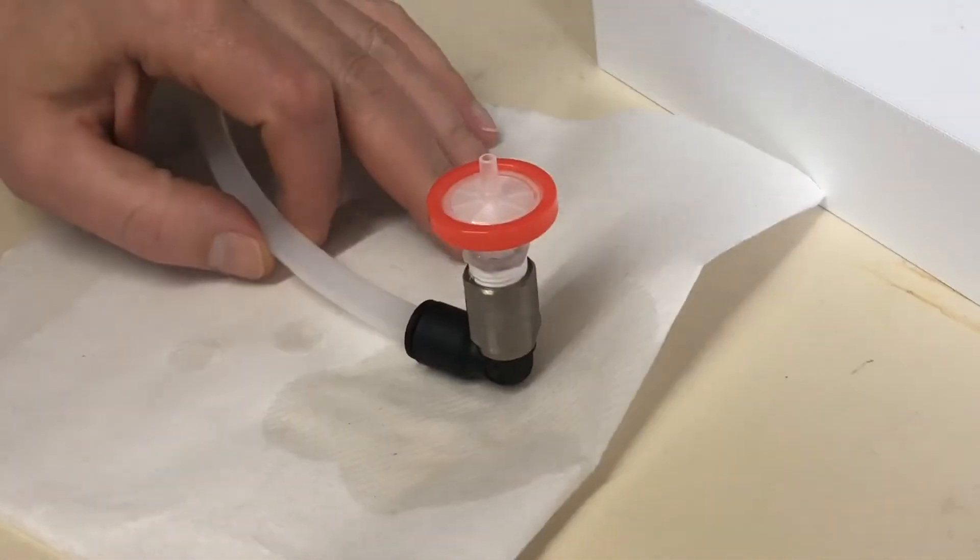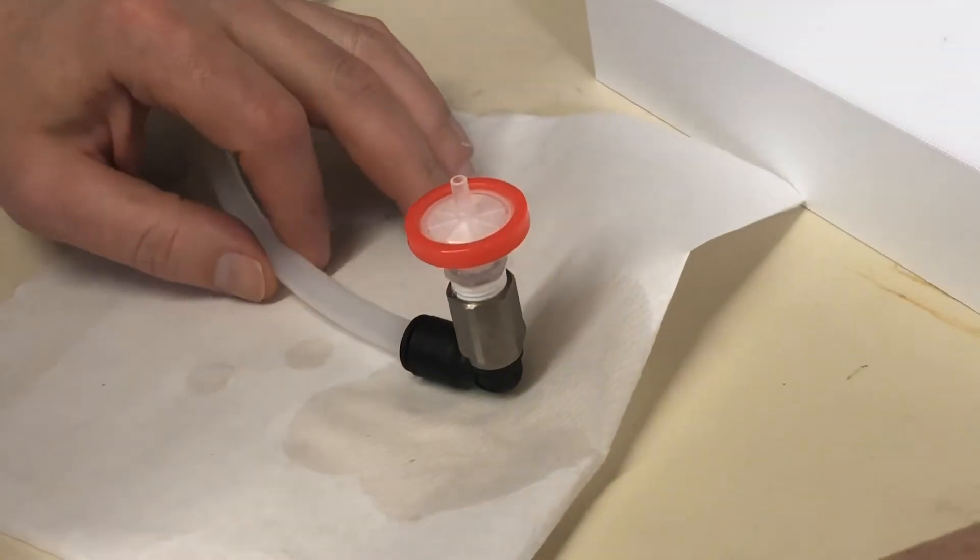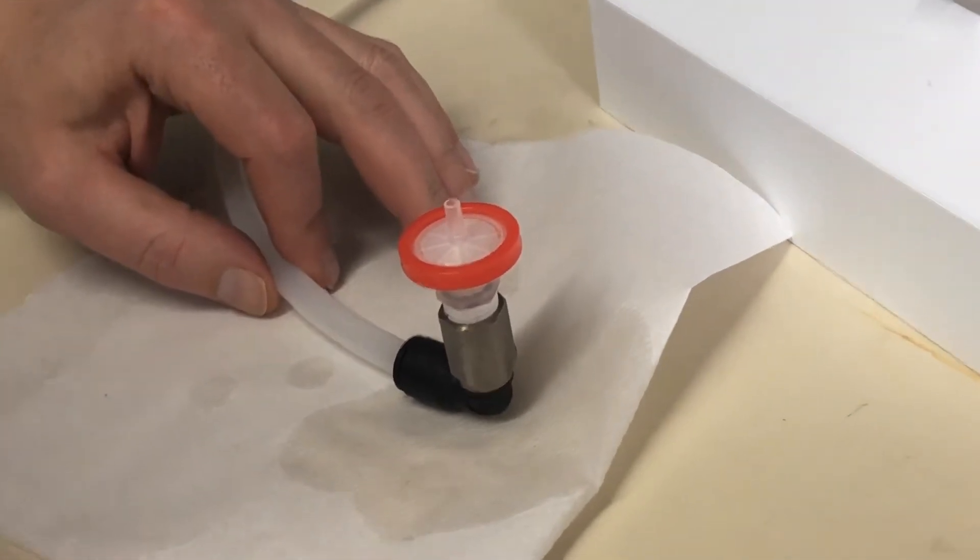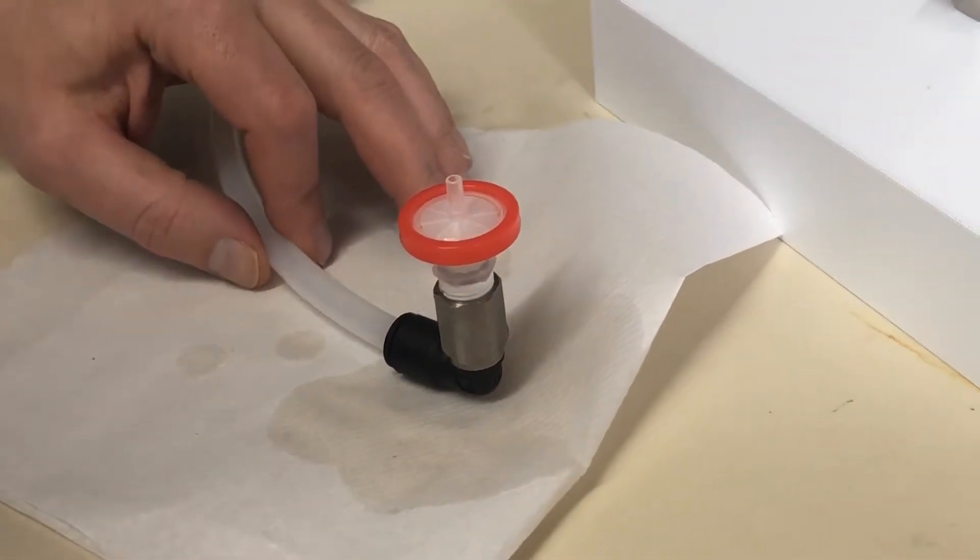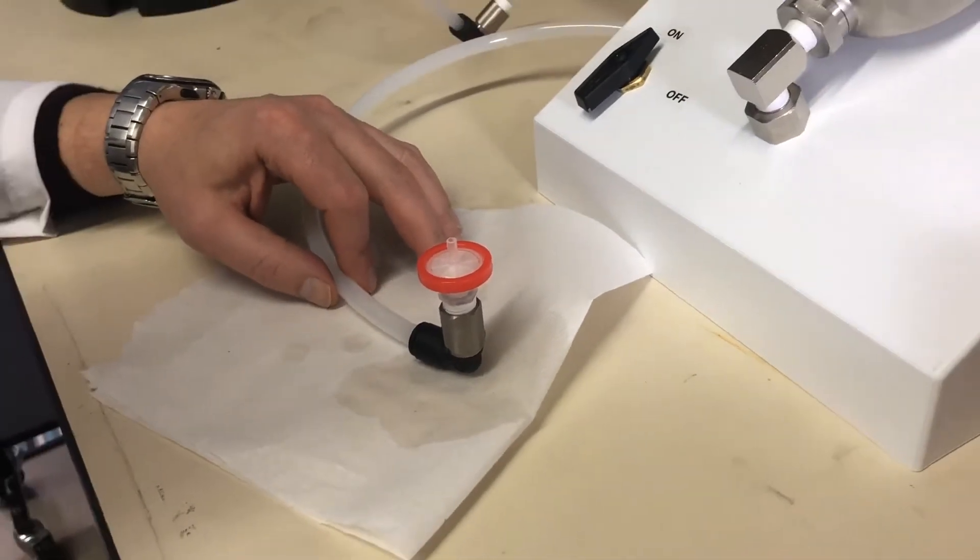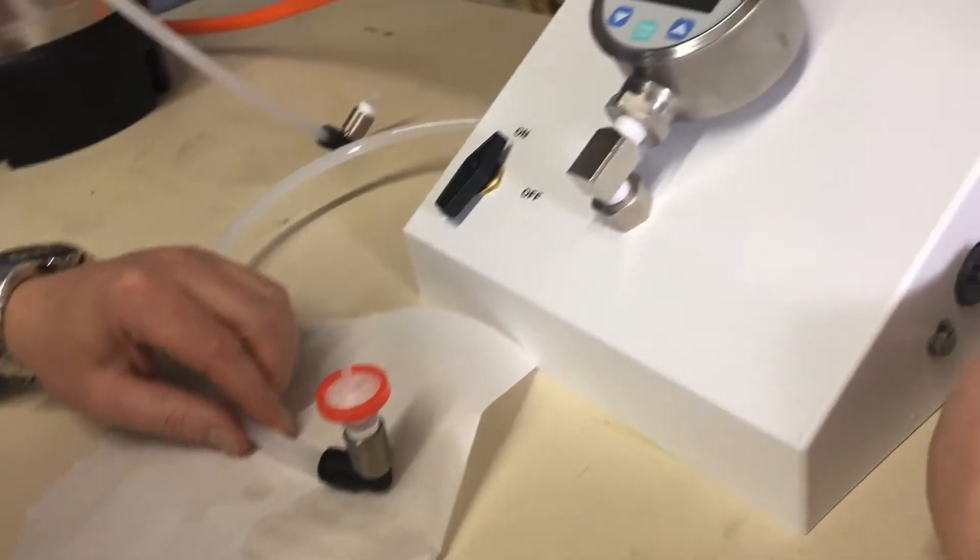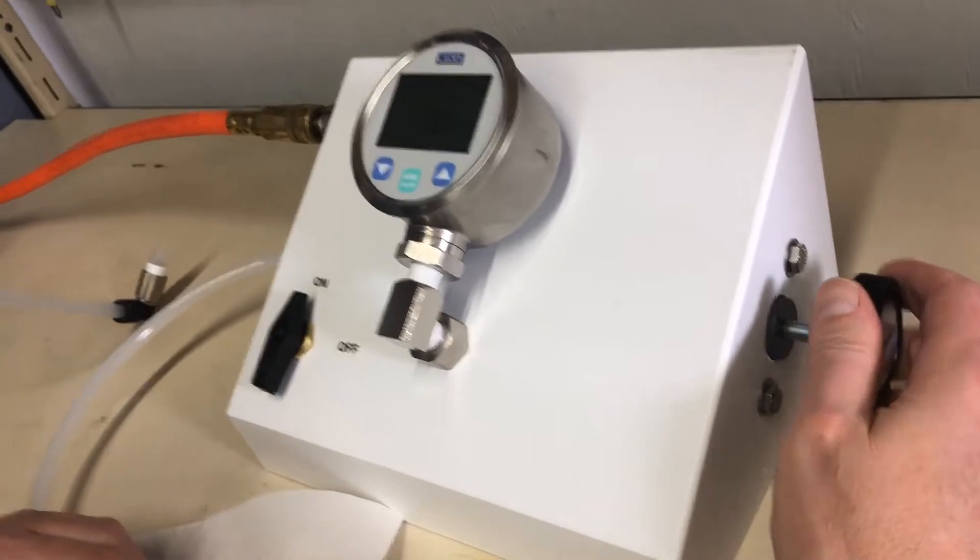And then we'll proceed as though we're doing a bubble point test. We'll ramp the pressure by turning the knob approximately a quarter turn per second until water appears in the outlet side of the filter housing, which should be quite obvious.